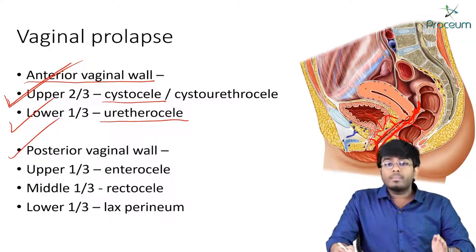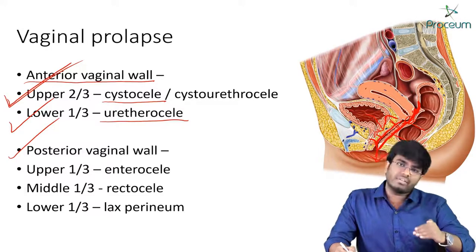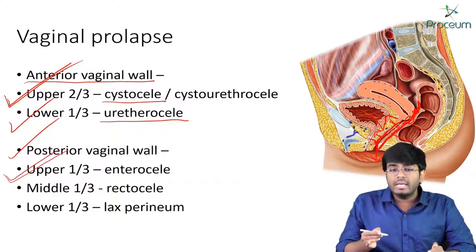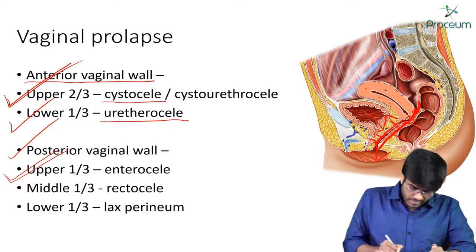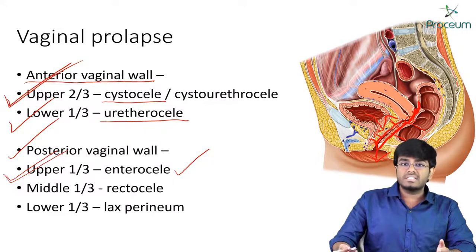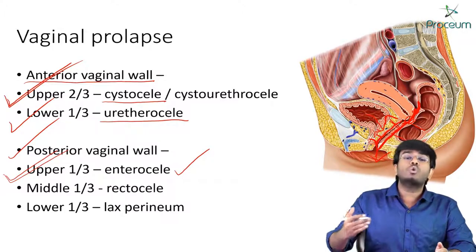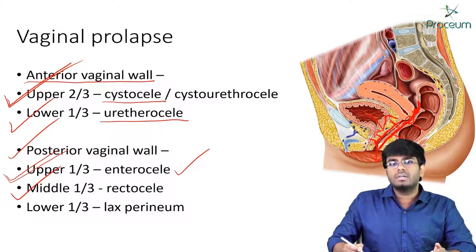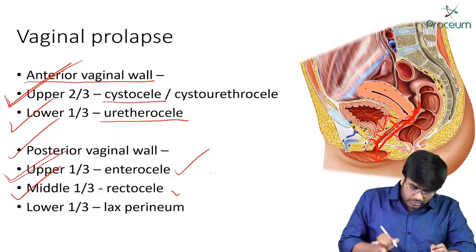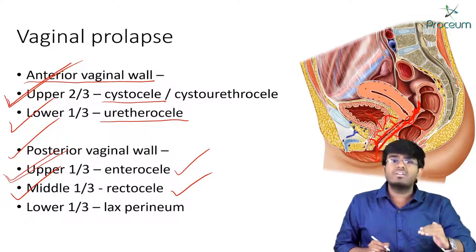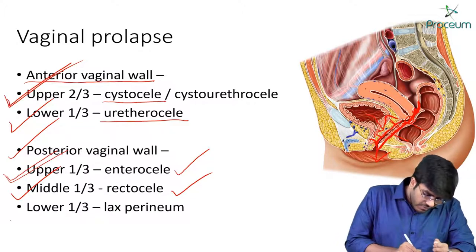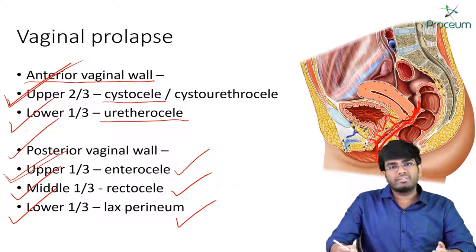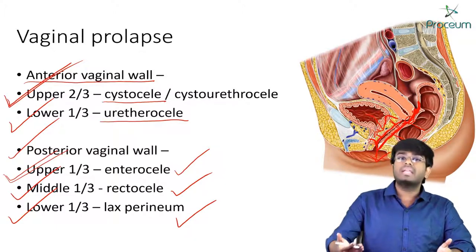Now for the posterior vaginal wall: whenever there is prolapse of the upper one-third, it is associated with enterocele — because in the pouch of Douglas there are intestines, so the intestines are falling out. Whenever there is prolapse of the middle one-third, you will have a rectocele, because the rectum is in close proximity with the middle one-third. And whenever there is prolapse of the lower one-third, you will have lax perineum, because it is in close relationship with the perineum and perineal body.